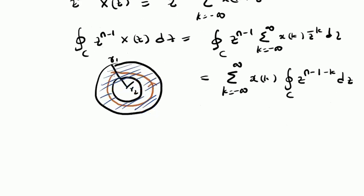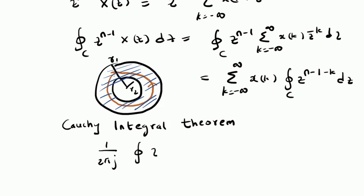Now we will invoke the Cauchy Integral Theorem, which basically states that 1 over 2 pi j times the integral of Z power n minus 1 minus k over the closed contour C dz equals 1 when k equals n, and equals 0 whenever k is not equal to n. In other words, this closed contour integral is basically equal to delta of k minus n, the Dirac delta function or the unit sample function.